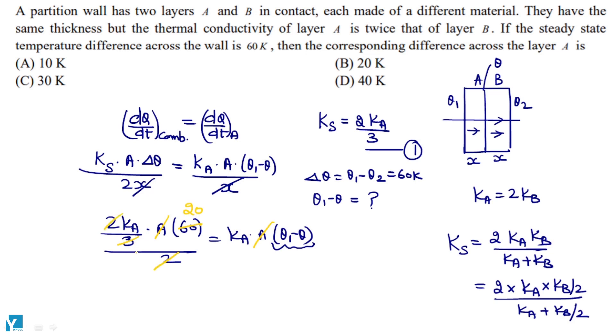K a and k a cancel out, so I have theta 1 minus theta value 20 Kelvin, which means that option B should be the required answer.